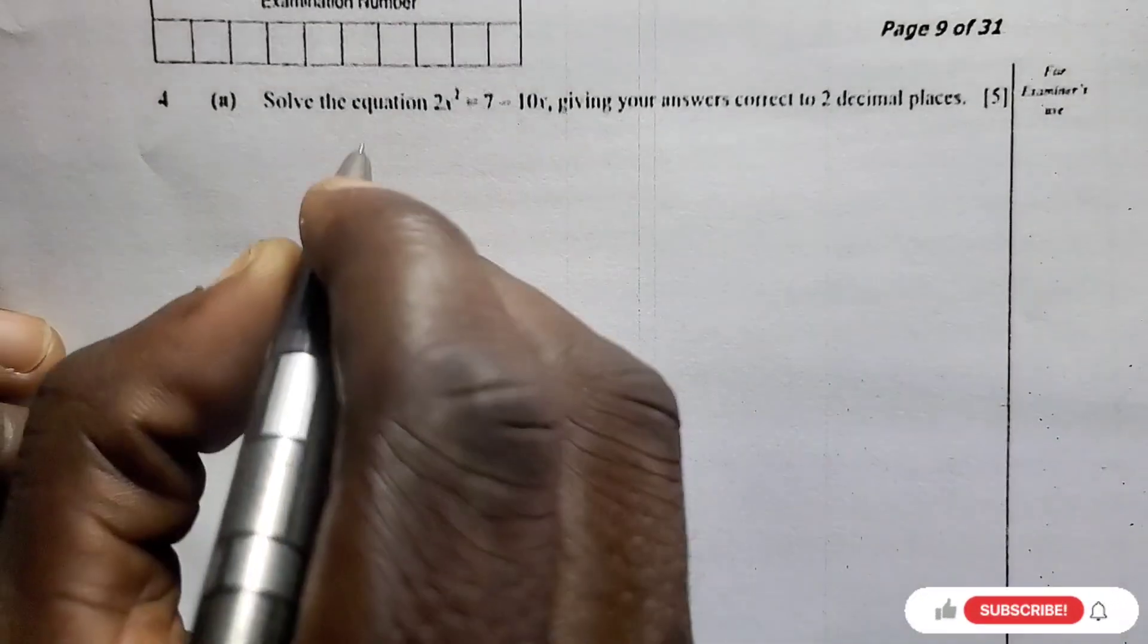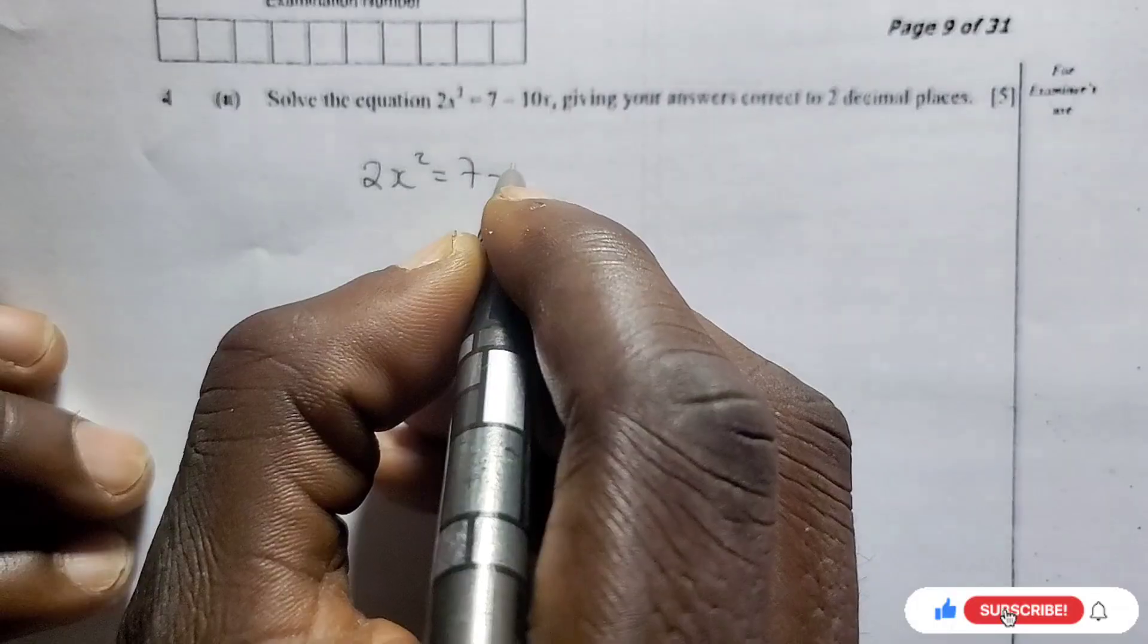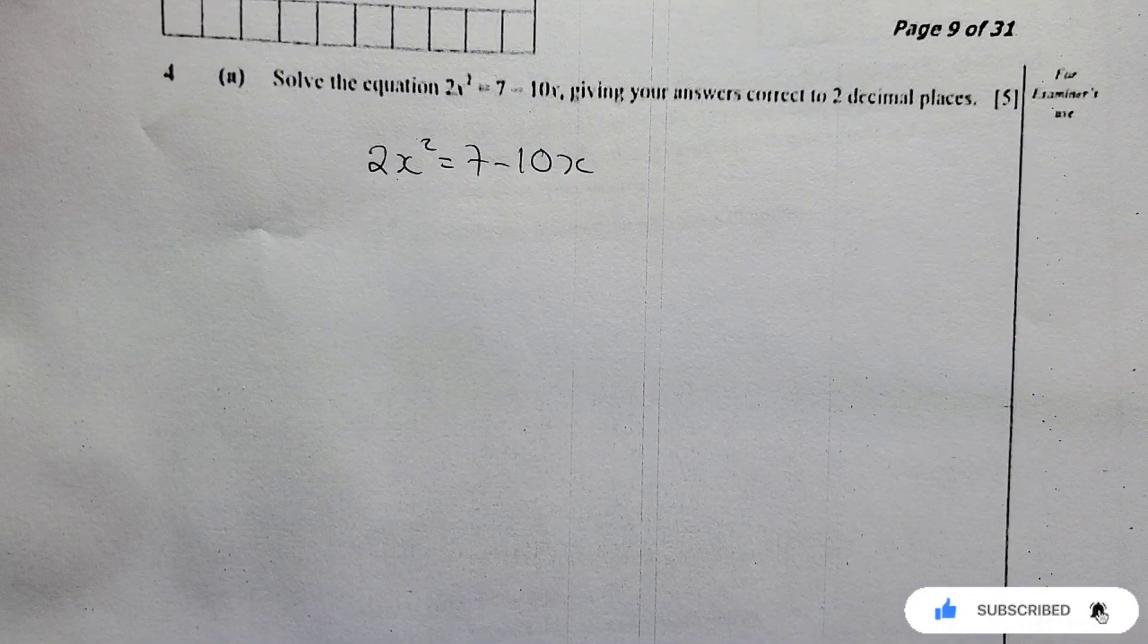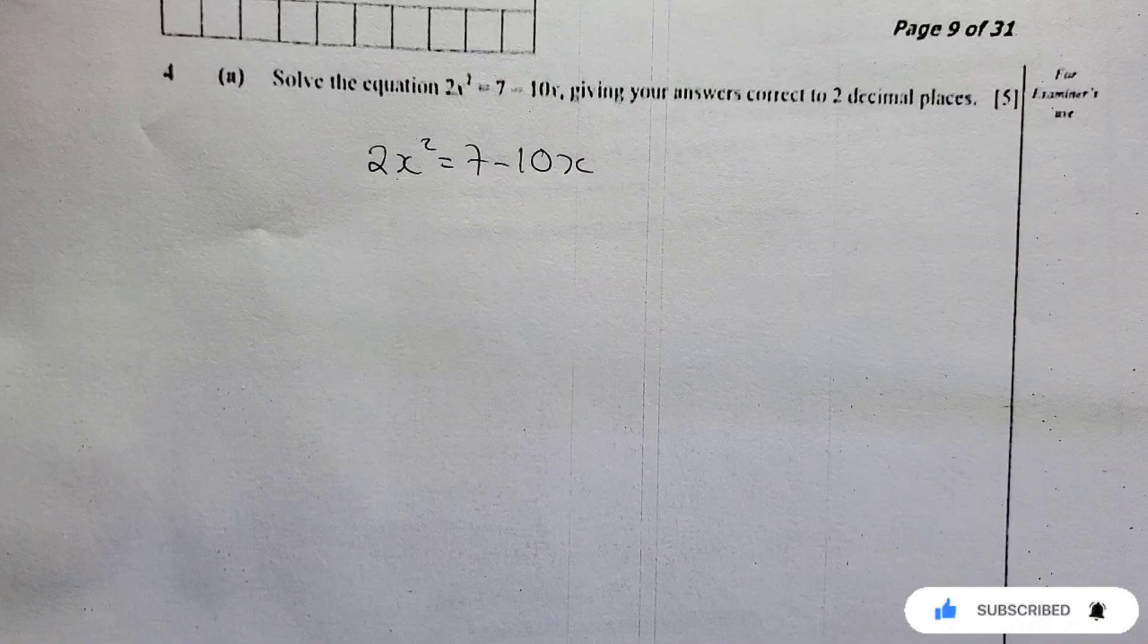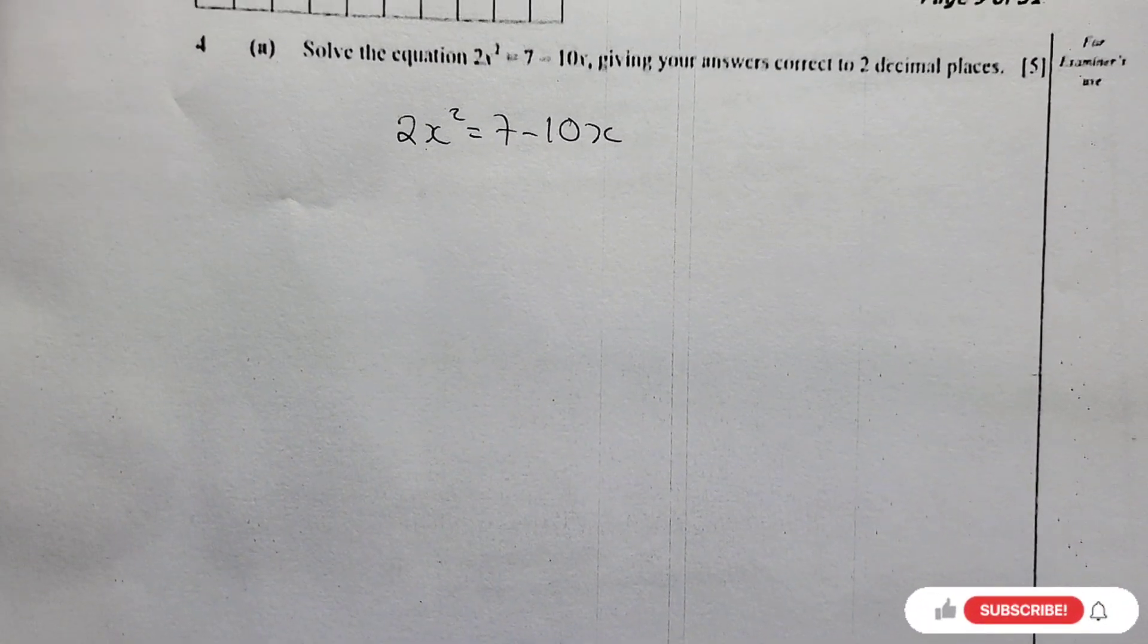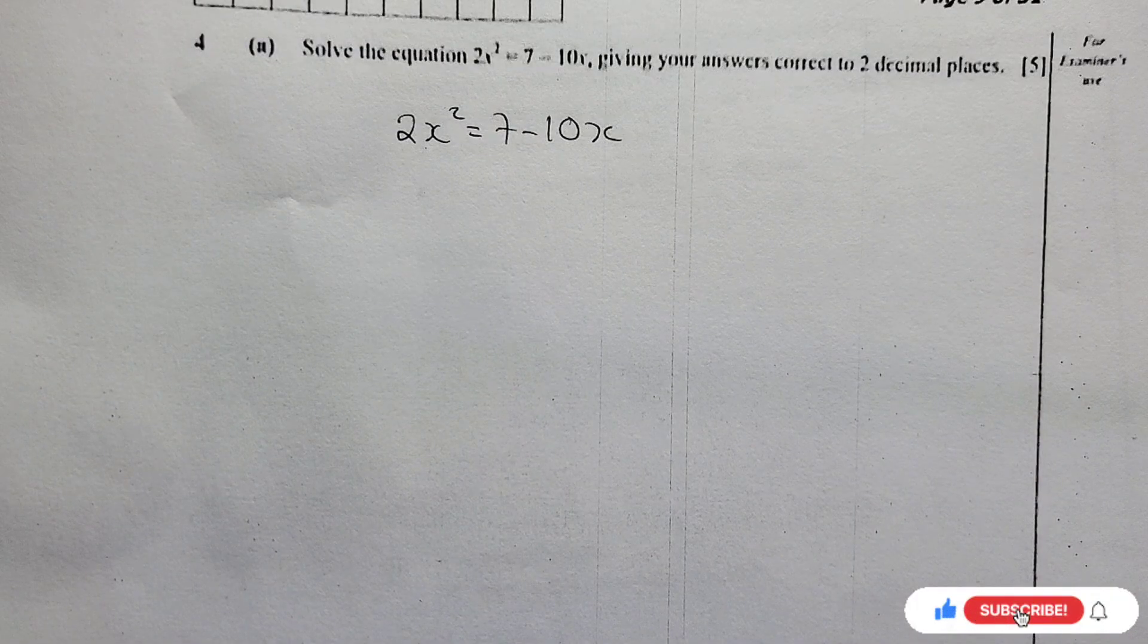So for A, we are given 2x squared equals 7 minus 10x. We are asked to solve this equation, giving our answers correct to 2 decimal places. So here the degree of accuracy is specified that we leave our answers to 2 decimal places.